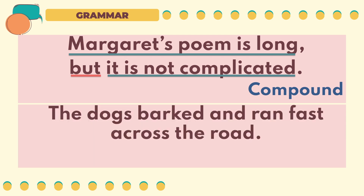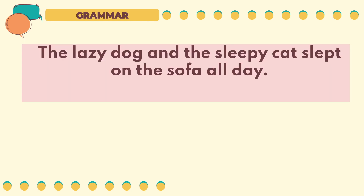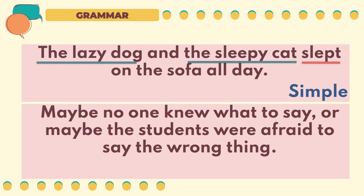Next sentence: 'The dogs barked and ran fast across the road.' This sentence is a simple sentence. It has one subject, 'the dogs,' and a compound verb, 'barked and ran.' Third sentence: 'The lazy dog and the sleepy cat slept on the sofa all day.' This is a simple sentence with a compound subject and a single verb. The compound subject is 'the lazy dog and the sleepy cat,' and the single verb is 'slept.' Fourth sentence: 'Maybe no one knew what to say. Or maybe the students were afraid to say the wrong thing.'